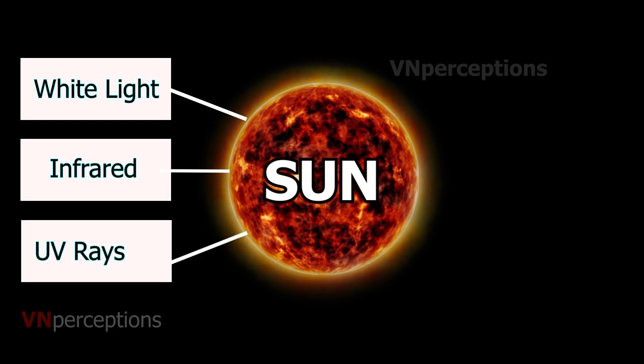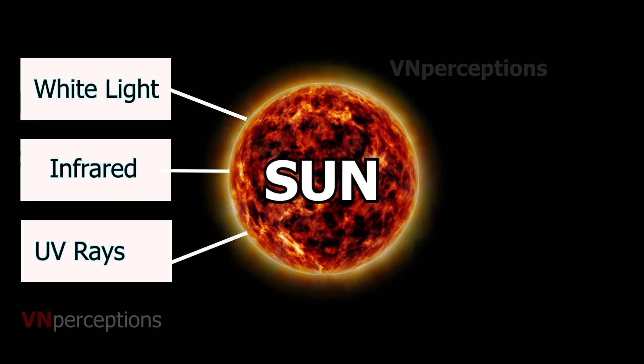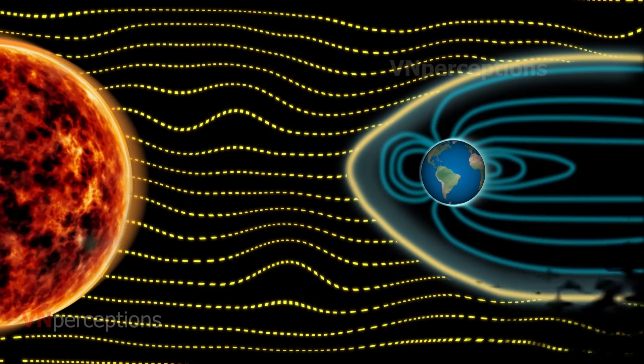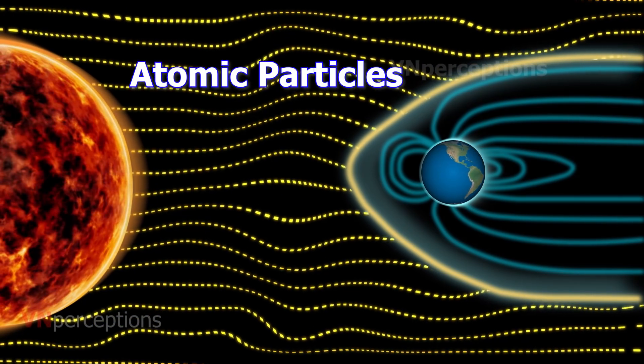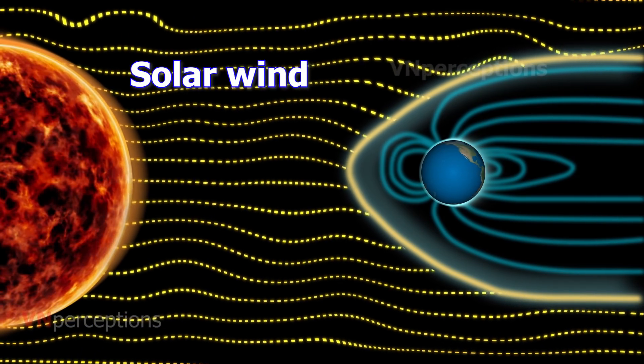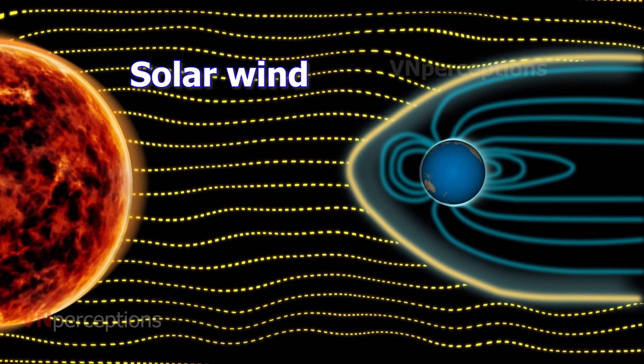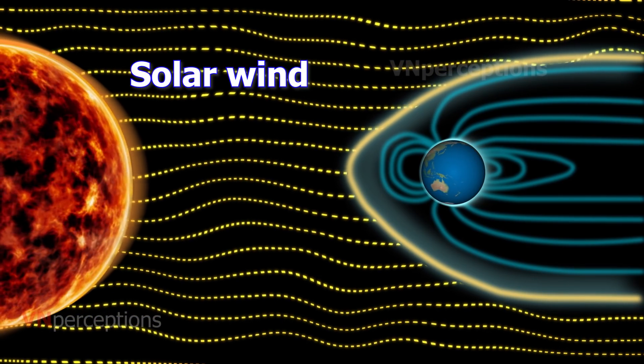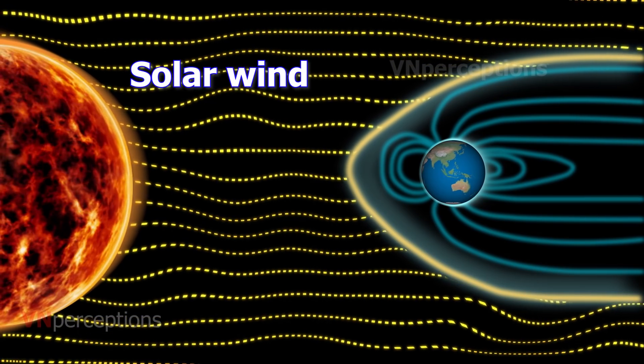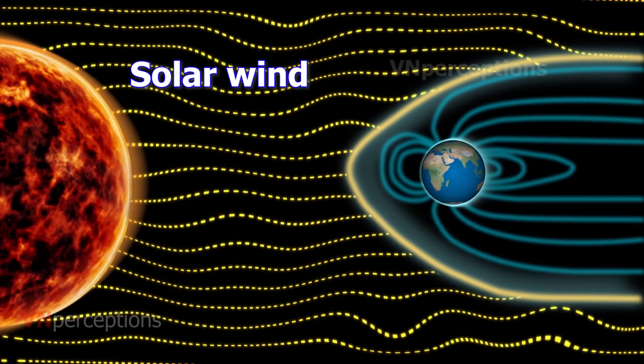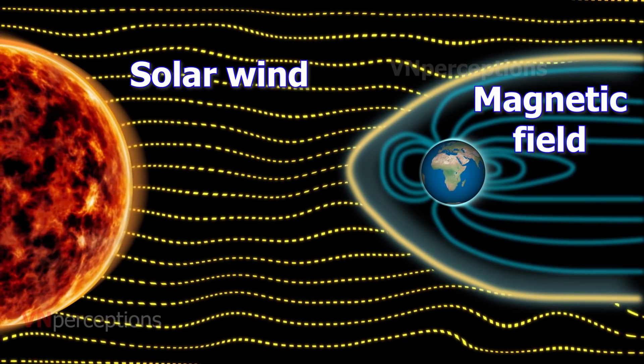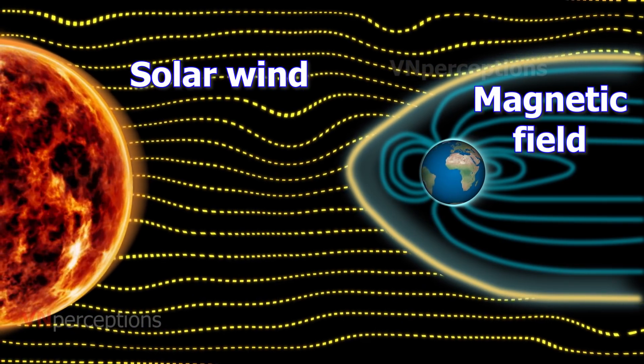The sun also emits atomic particles called solar wind. Most of the particles of the solar wind are charged electrons which can harm planet earth, but we are protected from the solar wind by the magnetic field around the earth.